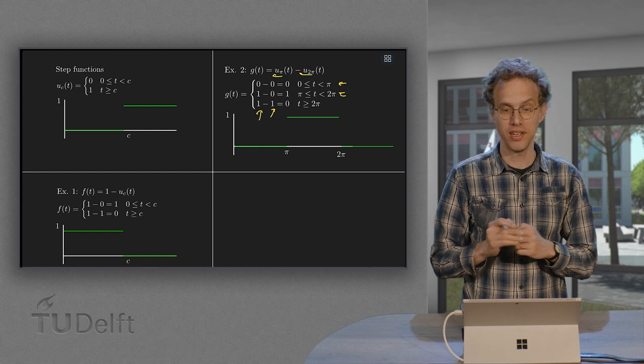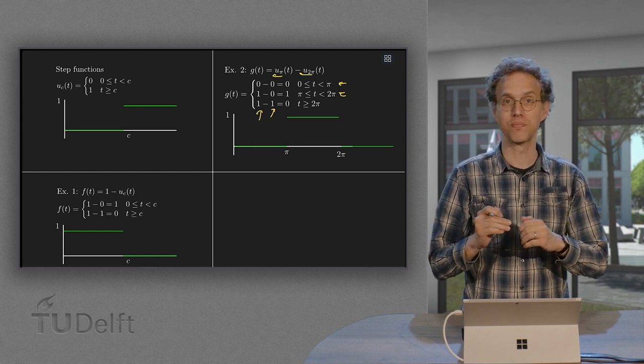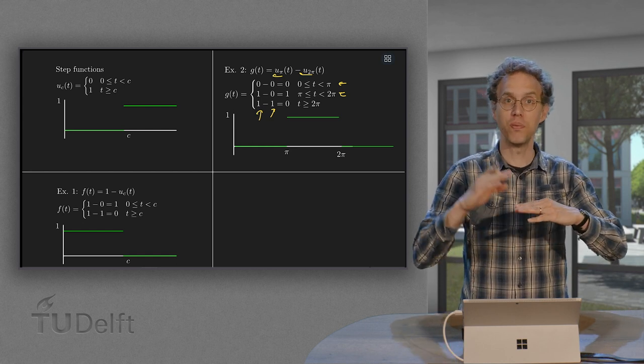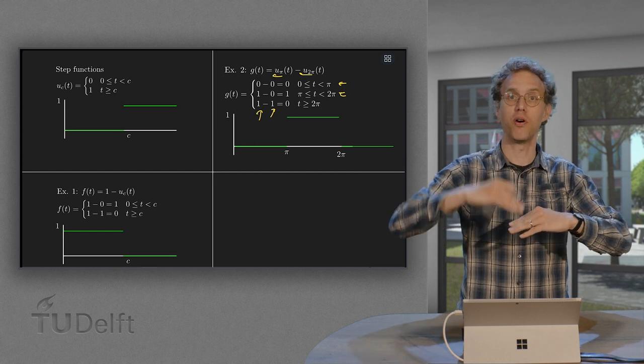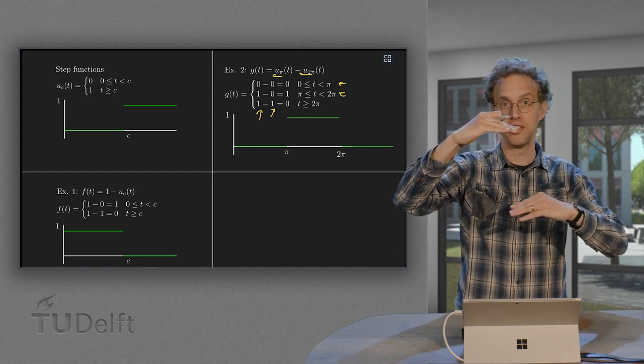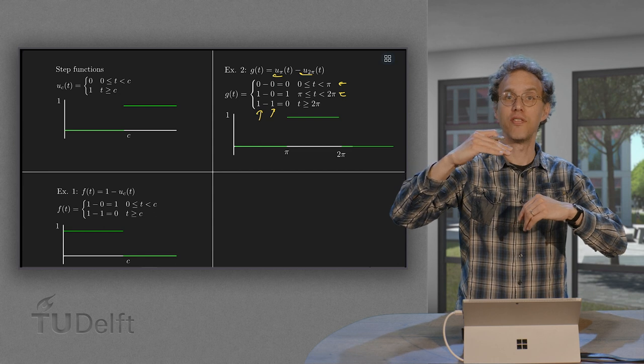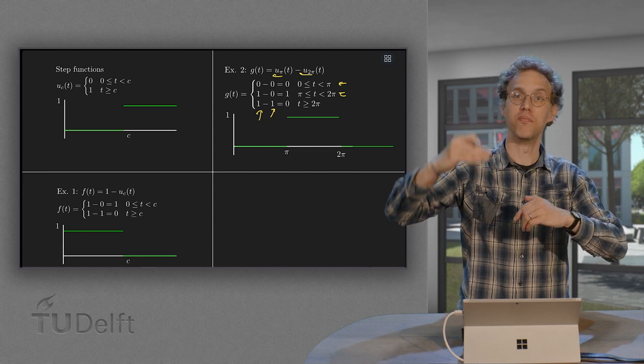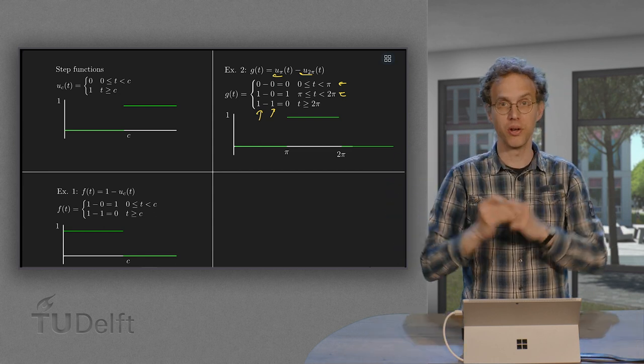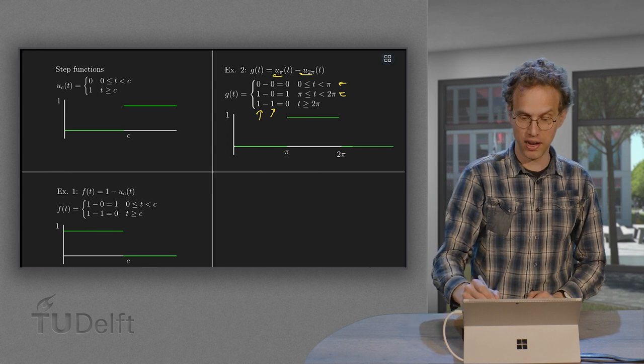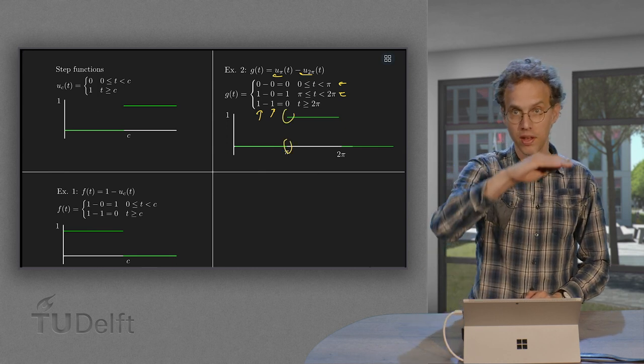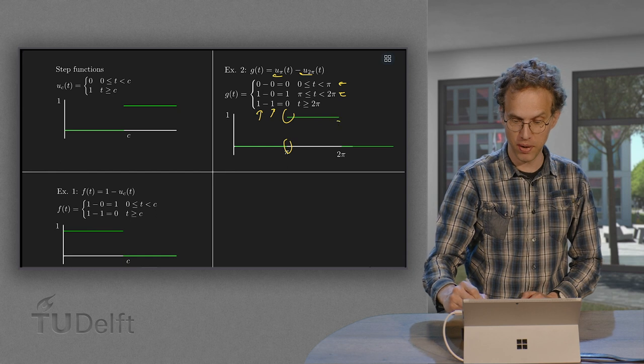So what's happening actually? You can already see what is going on. With the u pi we make one step up at t equals pi. And with the minus u pi we do a step of minus 1. Of the result if you are at t is 2 pi. So at pi we jump up to 1. And then u 2 pi makes us jump back at 2.